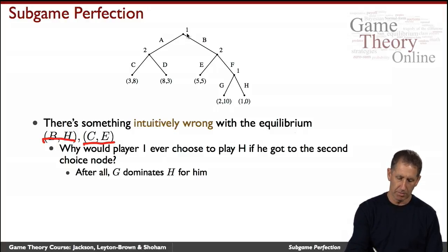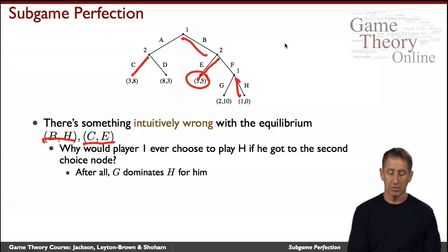What is B-H? Player 1 goes down here and down here, whereas Player 2 goes down here and down here. Under this strategy profile, the outcome of the game is this one, and the payoff to both players is 5.